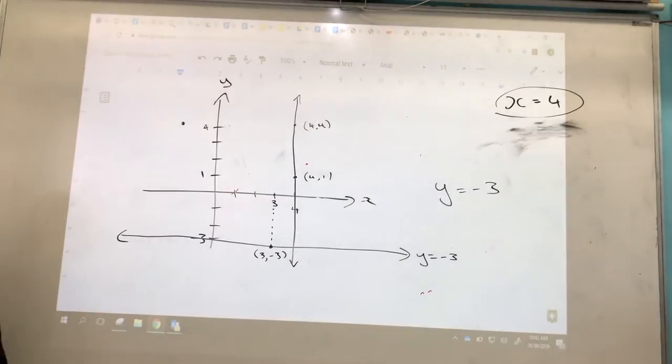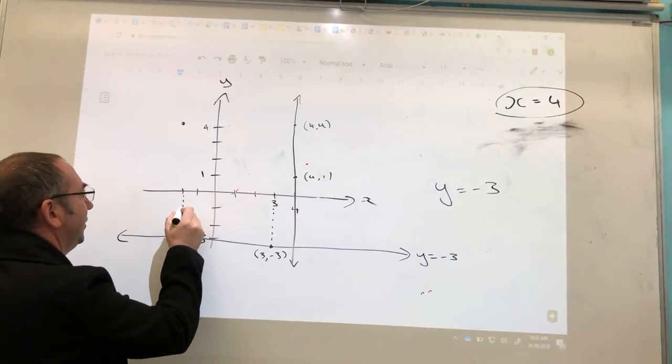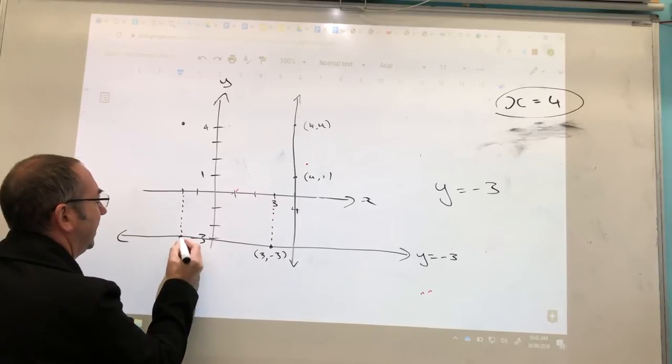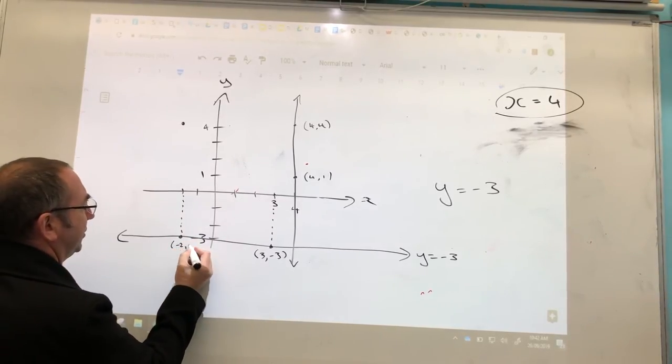So let's do it one more time. Can someone pick a low negative value for x, please? Minus 2. Thank you, Nick. There at minus 2. Go down to our line and look, magically, y equals minus 3. So that's minus 2 minus 3.